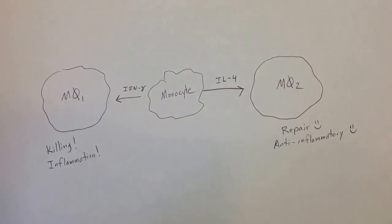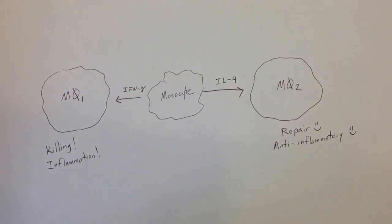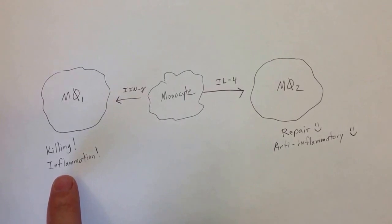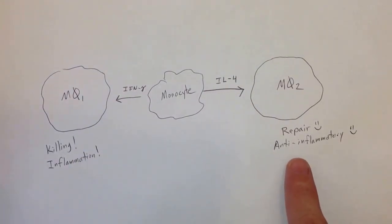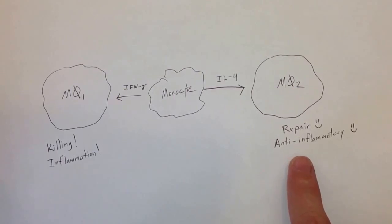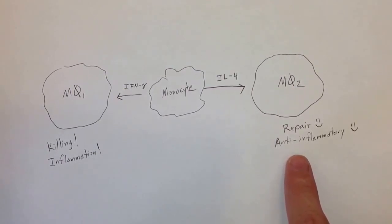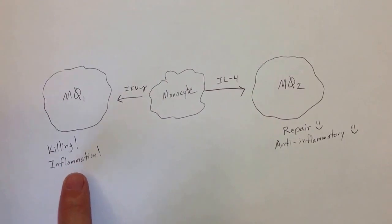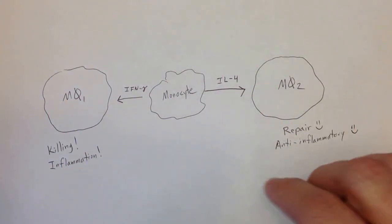And what's the difference between a type 1 and a type 2 macrophage? A type 1 macrophage is good at killing and is good at causing inflammation, whereas a type 2 macrophage is good at repair and anti-inflammatory activities. So the first video will be about the type 1 macrophage and the second video will be about the type 2 macrophage. So let's take a look at the chart.